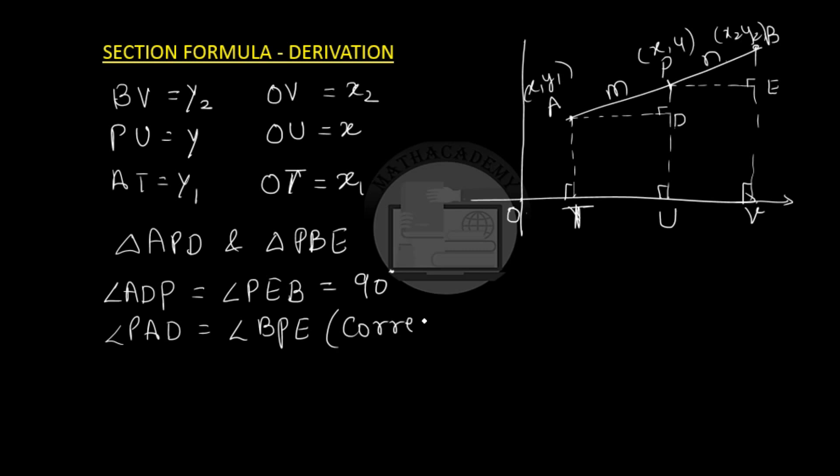When the lines are parallel, the corresponding angles are equal. So this angle here is equal to this angle here. Triangle APD is similar to triangle PBE. And if the triangles are similar, then the corresponding sides are in equal proportion.